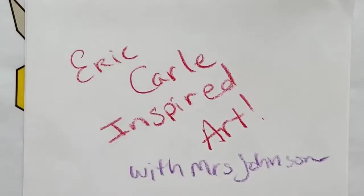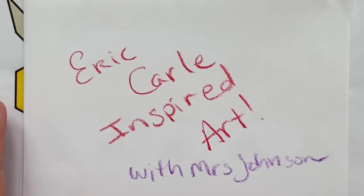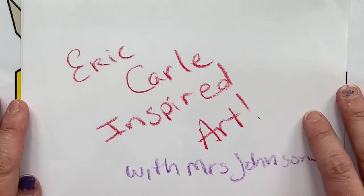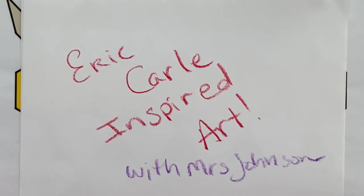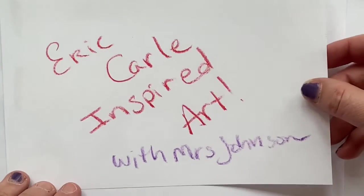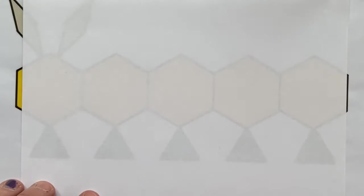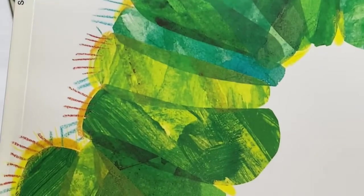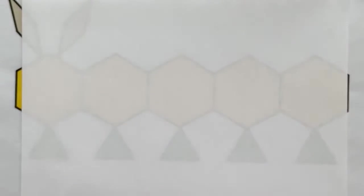Eric Carle's illustrations are not drawn, they are something called collage. He takes pieces of paper, usually tissue paper, and he paints his tissue paper and then lets it dry. He creates patterns, kind of like those orange stripes you saw in the cover of the book. You can also see it right here in the green - you can see all those stripes. He'll create a pattern and then he cuts out pieces and puts them in order to make a shape.